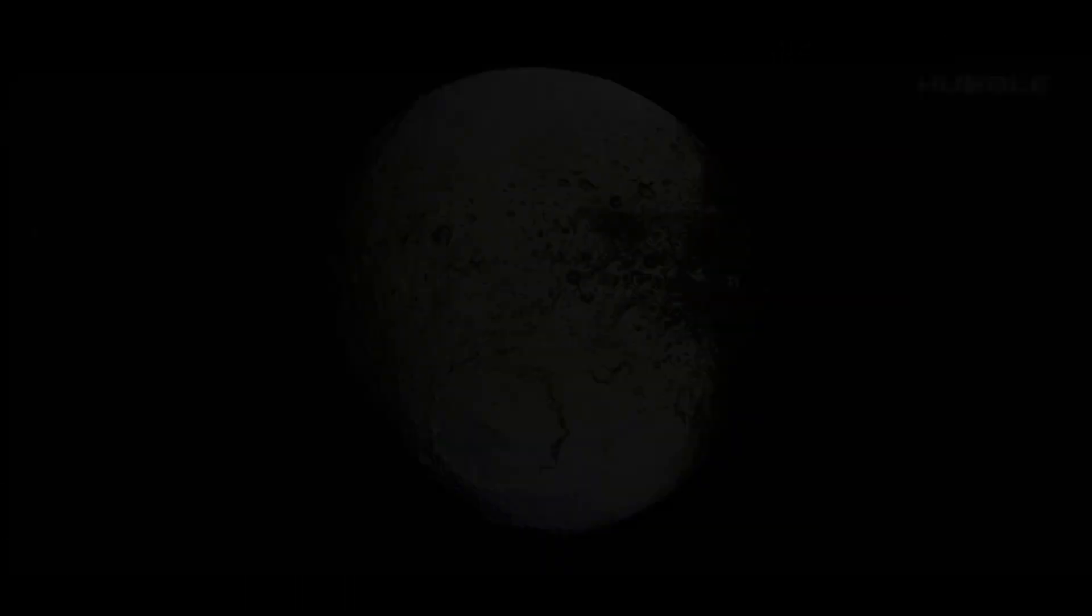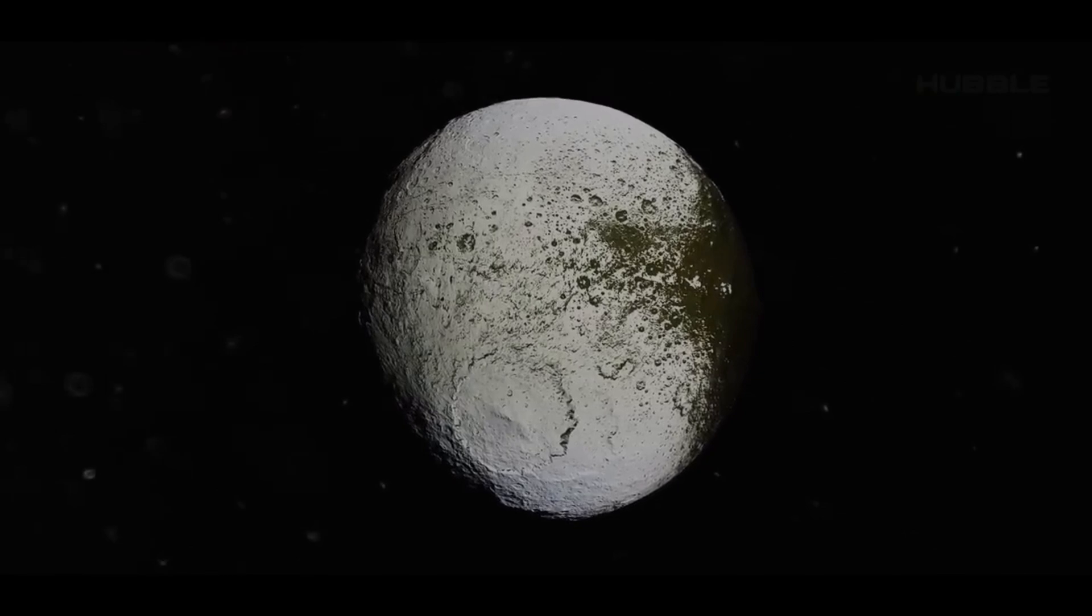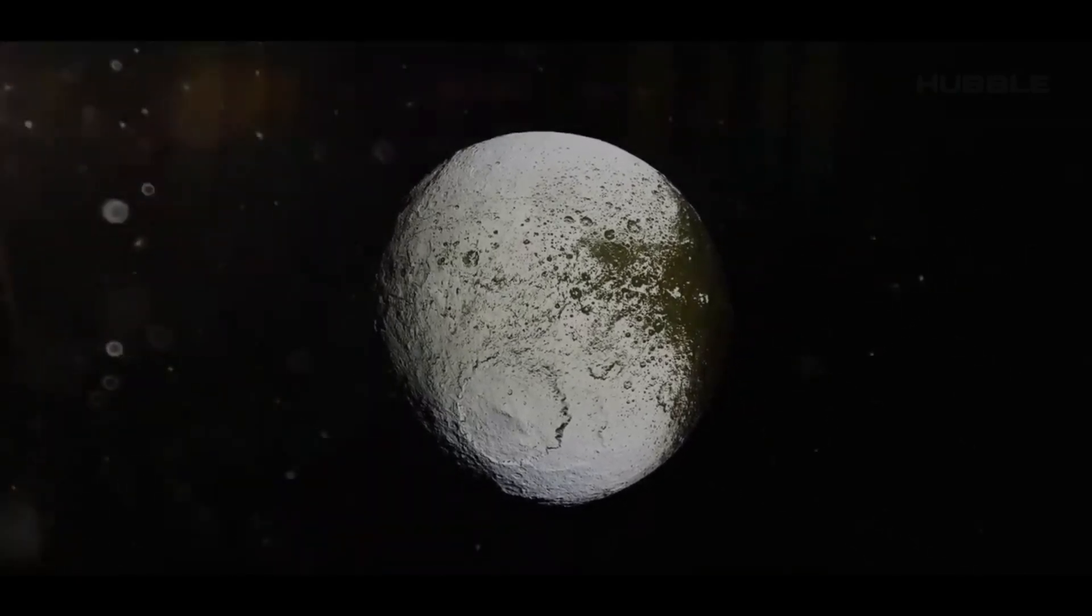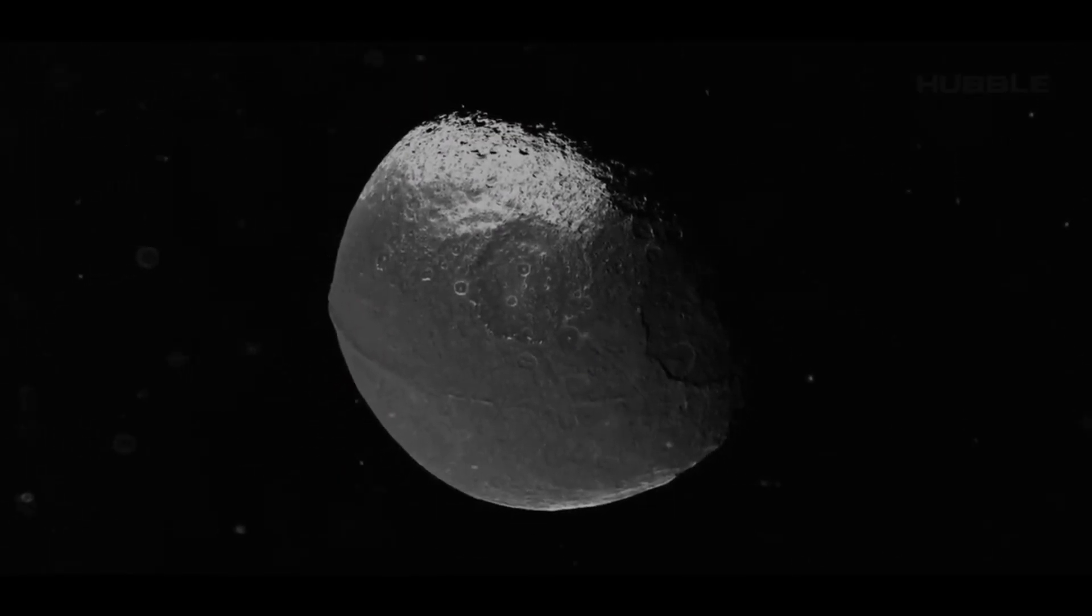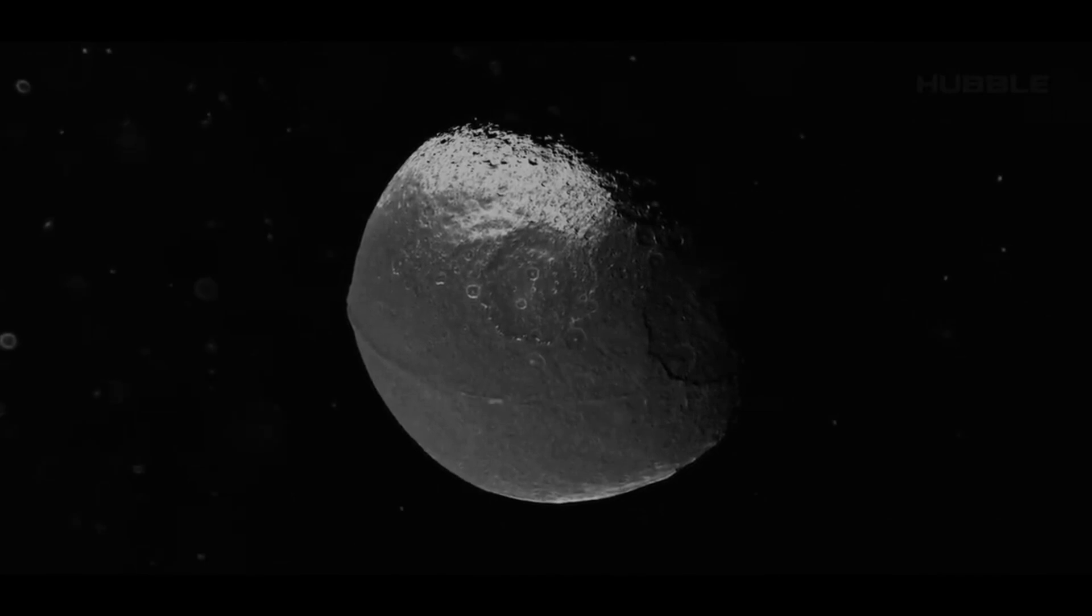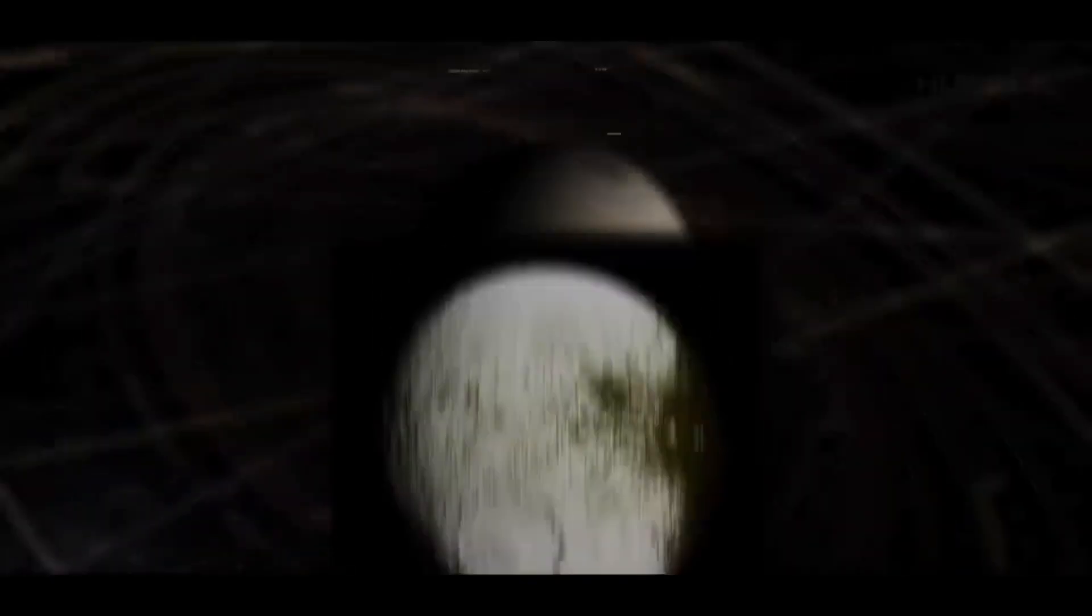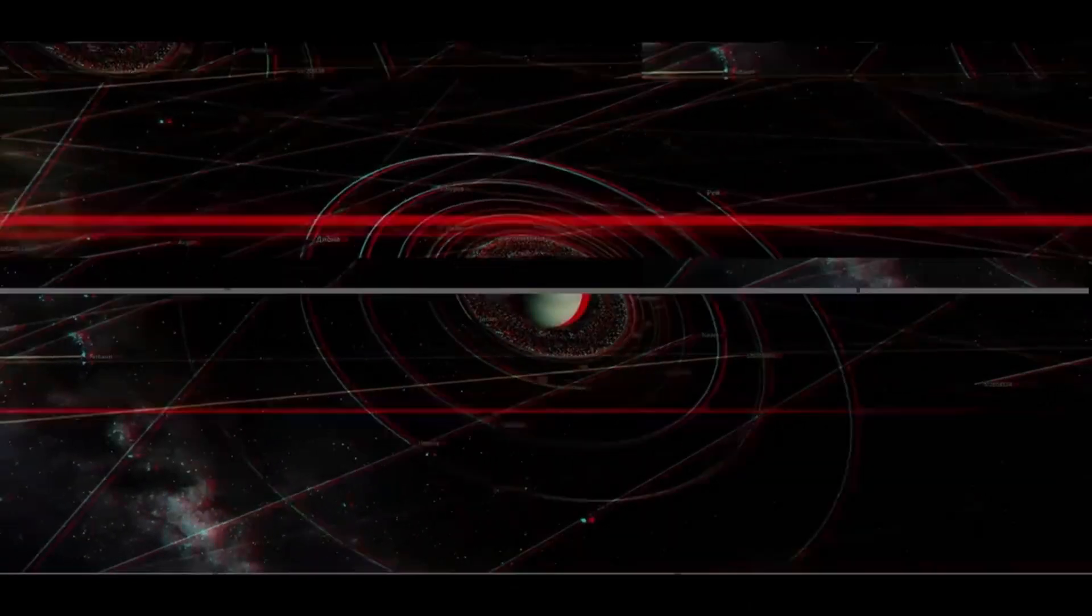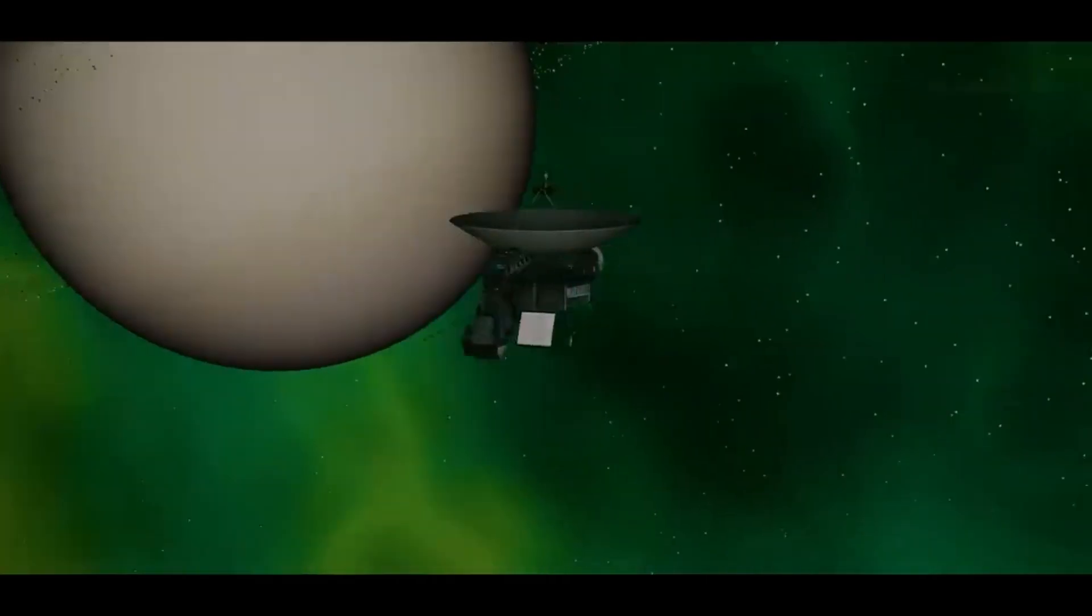Before Cassini began its mission, we had very little data on this satellite. The object is notable for its mountain range at the equator and its bicolor coloration. Thanks to Iapetus's recent research, we've learned that the satellite is synonymous with the word contrast. And it's not just the two contrasting surface colors. So what secrets does Iapetus hold and why is it called a strange satellite of the solar system?